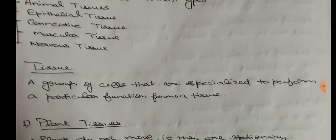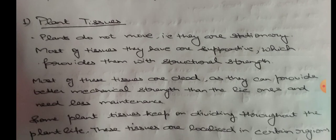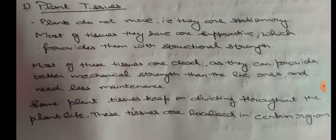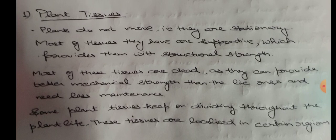We will study plant tissues and animal tissues one by one, and in today's video we will start with the plant tissues. Plants do not move — they are stationary — so most of the tissues they have are supportive, which provide them with structural strength.